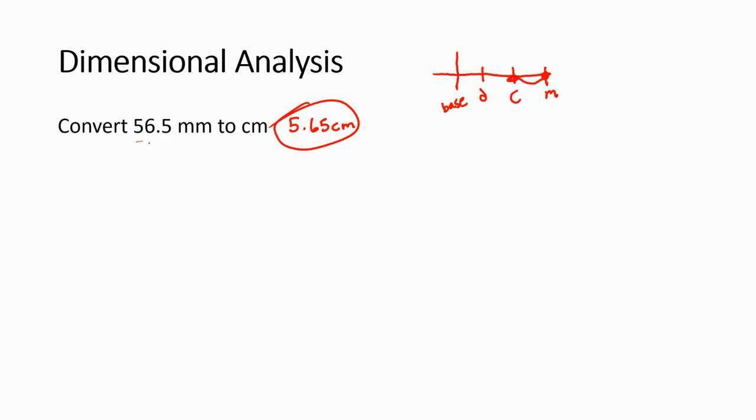It says identify the given. That's my given 56.5 millimeters. I usually am going to start by just rewriting that. So I say 56.5 millimeters. And then I'm going to draw a horizontal line underneath that unit and a vertical line right next to it. We'll talk about why momentarily.